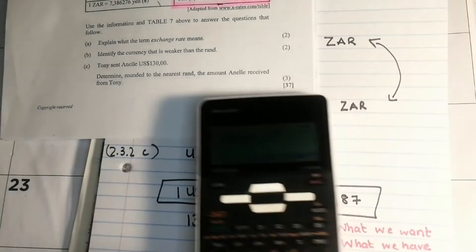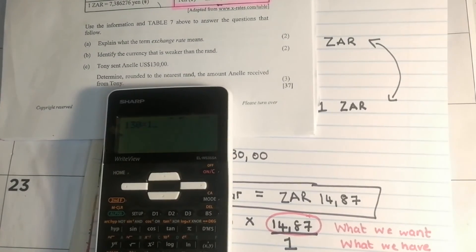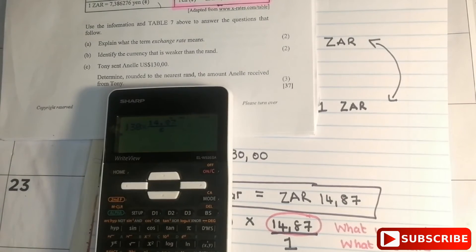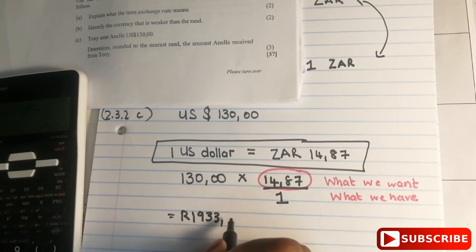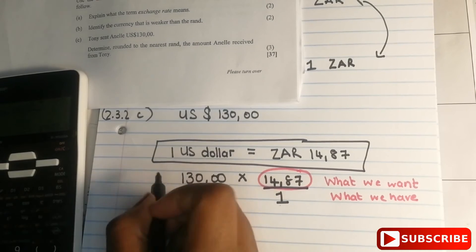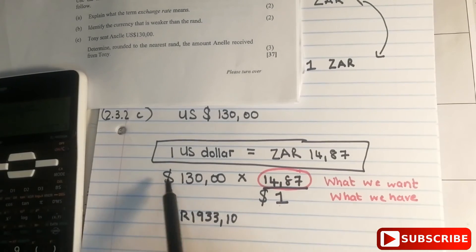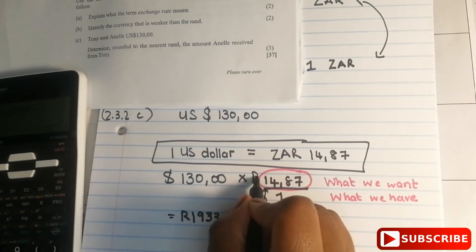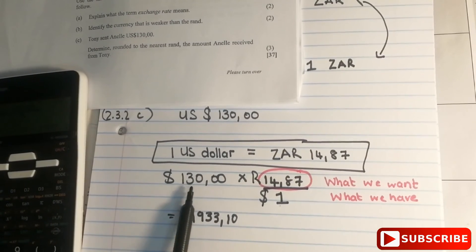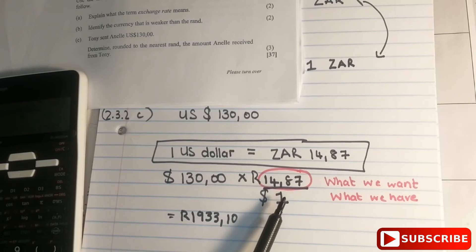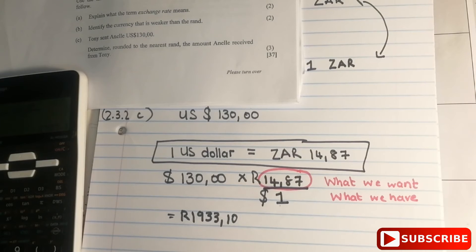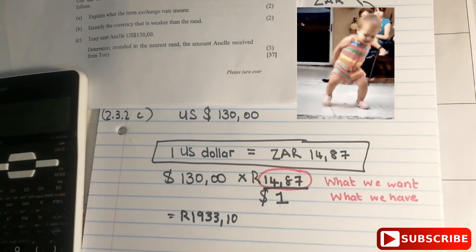Punching that into the calculator: 130 × 14.87 ÷ 1 = R1,933.10. The dollar units cancel, leaving rands. So 130 US dollars multiplied by R14.87 per dollar gives R1,933.10. Rounded to the nearest rand, Anayla received R1,933.